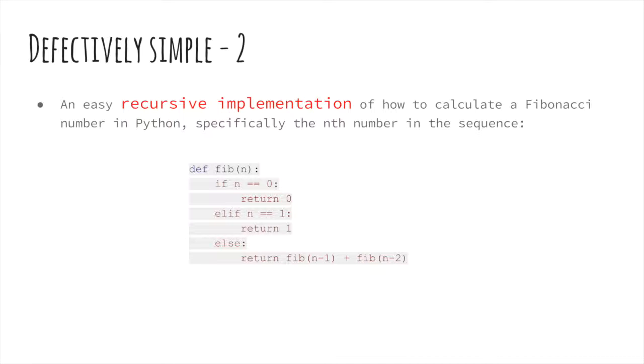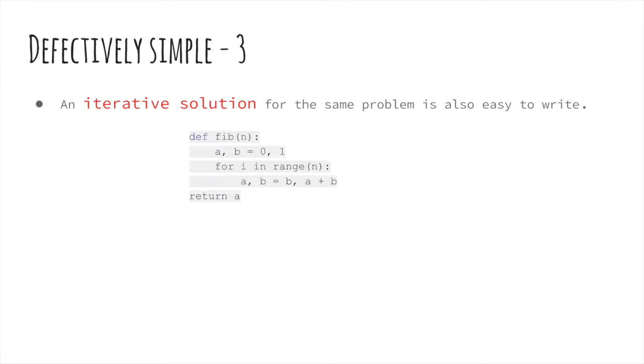Now let's look at the iterative solution. An iterative solution for the problem is also easy to write. Though the recursive solution looks more like the mathematical definition. Here we also have a single argument n. However, instead of making recursive calls, we run a loop n times to find the nth element. After looking at both solutions, which one do you think is faster?